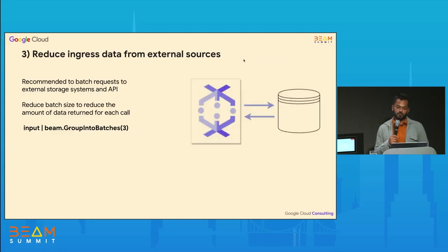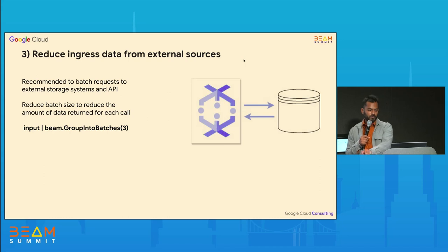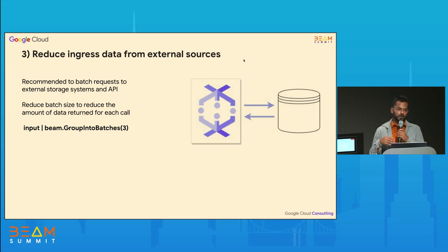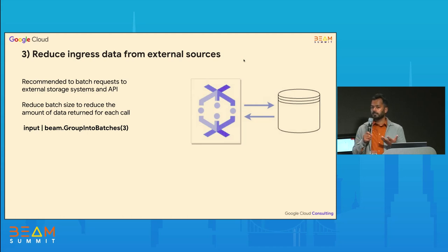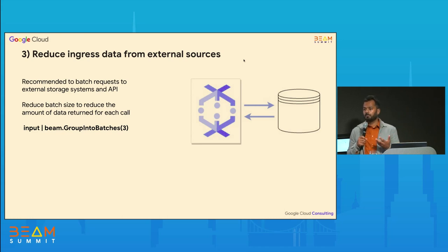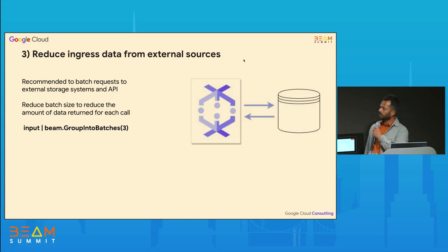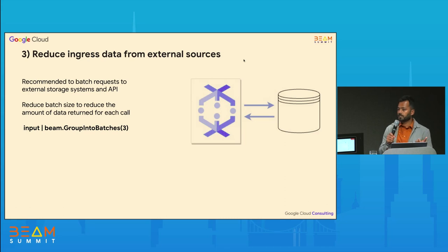The next best practice is on reducing the ingress data from external sources. Within Beam pipelines, it's common to look up data from external systems or APIs. When doing these kinds of lookups or calls, it's always recommended to batch these requests, because not only are they expensive, but they also add latency and can overburden the external system since Dataflow can spin up many concurrent calls. There is a Beam method called group-into-batches that you can use to create batches of fixed size.